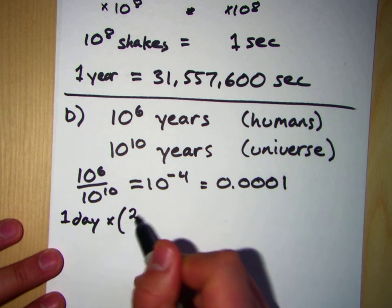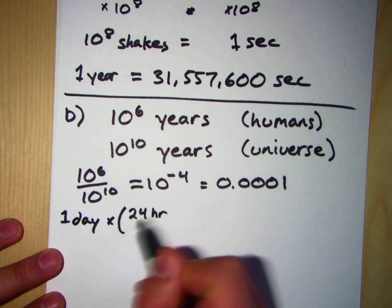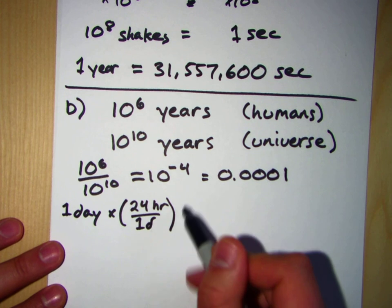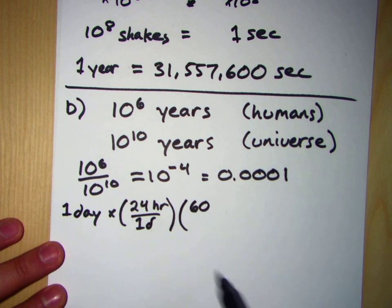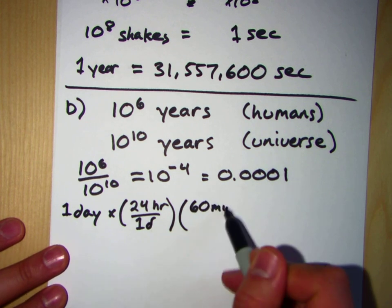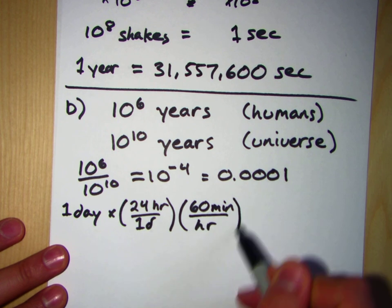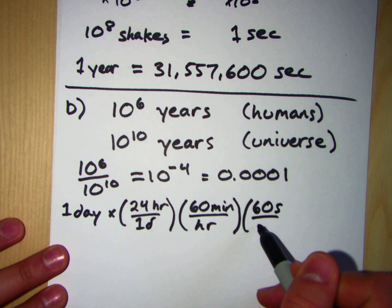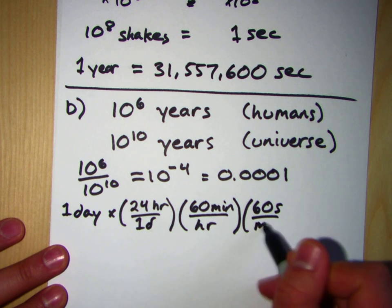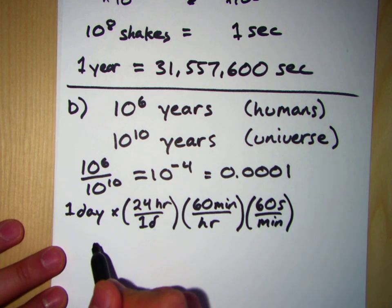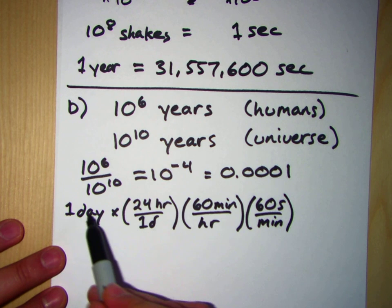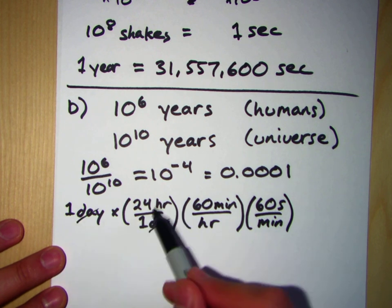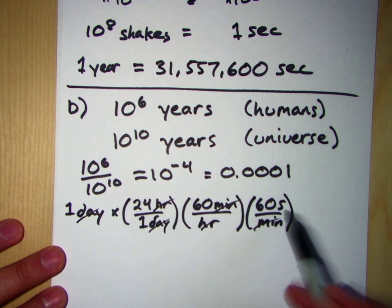So one day there are 24 hours in one day, there are 60 minutes in an hour, and there are 60 seconds in a minute. And if we make sure, let's make sure our units all cancel out, days with days, hours with hours, minutes with minutes, and we're left with seconds.